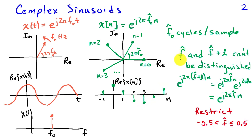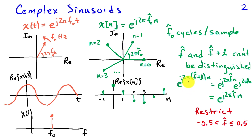One important property of discrete time spectra is that discrete time frequencies f-hat and f-hat plus l cannot be distinguished. That's because taking a step of f-hat is identical to taking a step of f-hat plus 1 — going one extra revolution — or f-hat plus 2, or f-hat minus 1. Algebraically, e to the j 2 pi (f-hat + l) n equals e to the j 2 pi f-hat n times e to the j 2 pi l n. Since l is an integer, e to the j 2 pi l n equals 1, and therefore the expression equals e to the j 2 pi f-hat n.